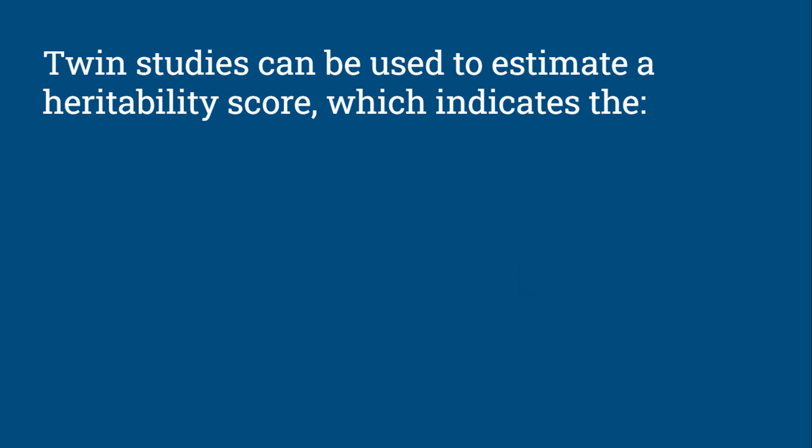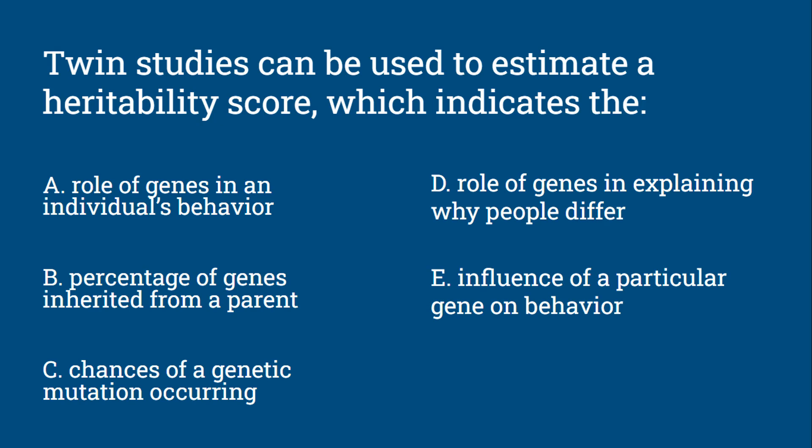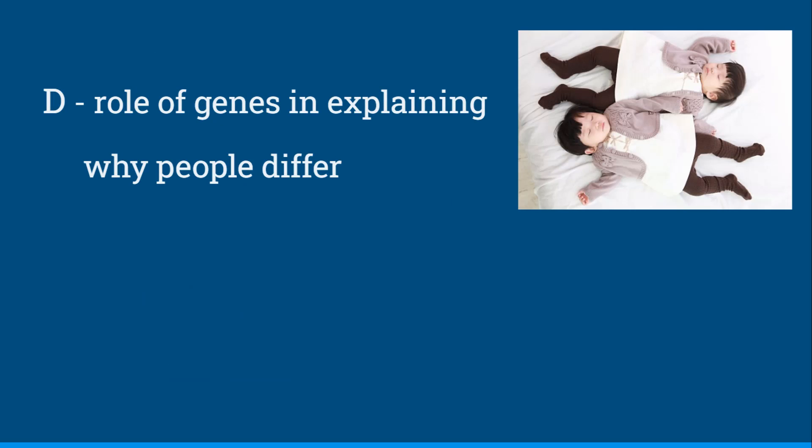Question 2: Twin studies can be used to estimate a heritability score, which indicates the — role of genes in an individual's behavior, the percentage of genes inherited from a parent, the chances of a genetic mutation occurring, the role of genes in explaining why people differ, or the influence of a particular gene on behavior? And the answer is D: the role of genes in explaining why people differ.